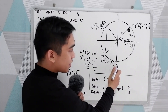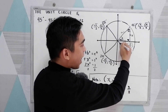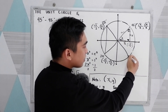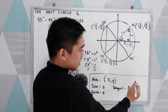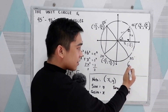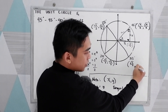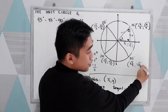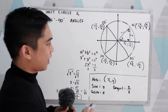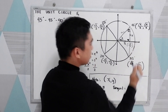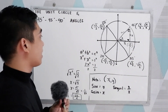Then 270 plus 45 is 315 degrees. In quadrant 4, the sign is positive for x and negative for y. So positive square root of 2 over 2 and negative square root of 2 over 2. We are now done with the 45-degree angles on the unit circle.